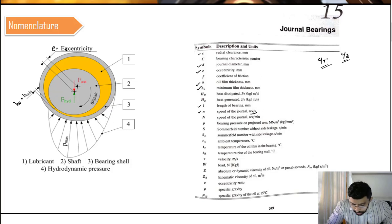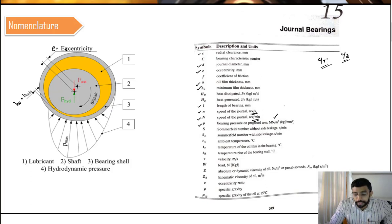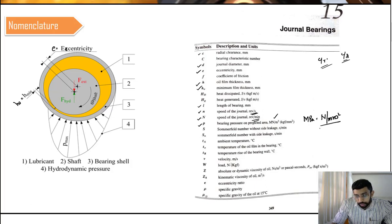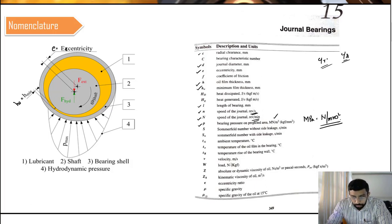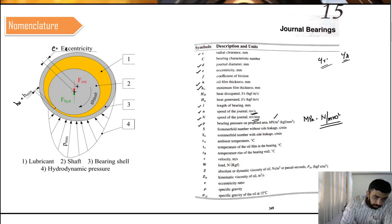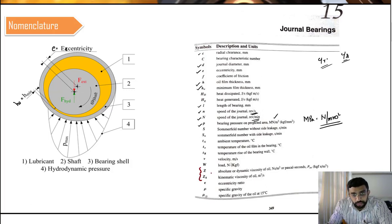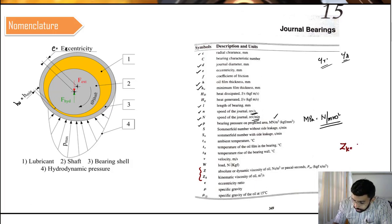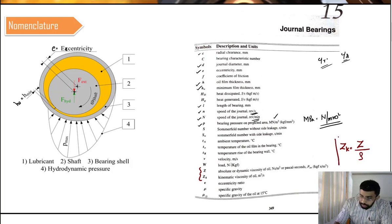Small n is the speed of the journal in rps, and capital N is in rpm. Pressure is in mega Pascal, which is equal to Newton per mm². Load has units of Newton. Two important terms to keep in mind are absolute or dynamic viscosity and kinematic viscosity. Kinematic viscosity equals dynamic viscosity divided by density — substituted in units of N·s/m² and m²/s respectively.